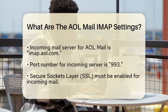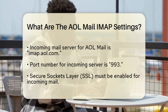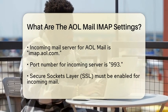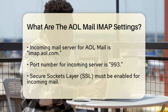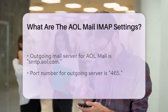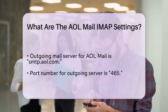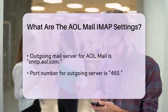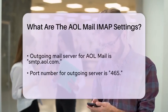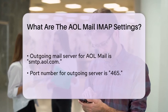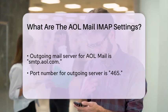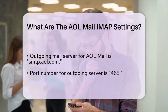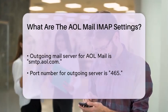Next, we move on to the outgoing mail server settings. The server name for sending emails is smtp.aol.com. The port number for this server is 465, and again, you should enable SSL to ensure your email communications are secure.